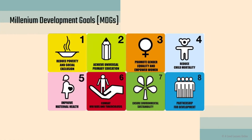These are the eight different MDG goals. First, reducing poverty and social exclusion. Second, achieving universal primary education. Third, promoting gender equality and empowering women. Fourth, reducing child mortality. Fifth, improving maternal health. Sixth, combating HIV/AIDS and tuberculosis. Seventh, ensuring environmental sustainability. Eighth, partnership for development. You need to know these main headers and what they are about.